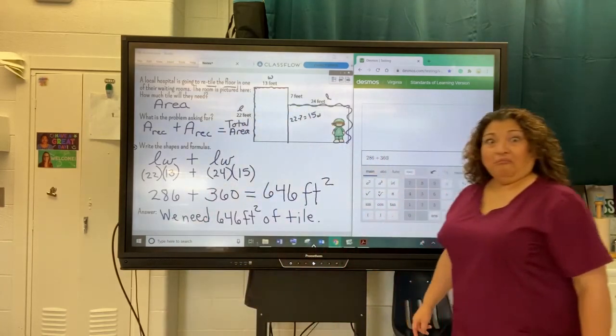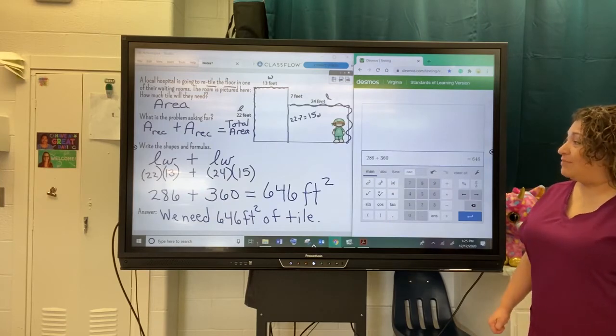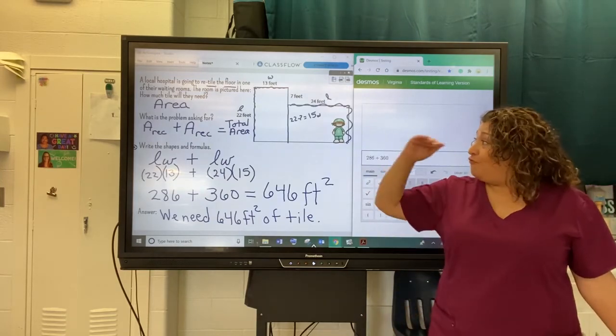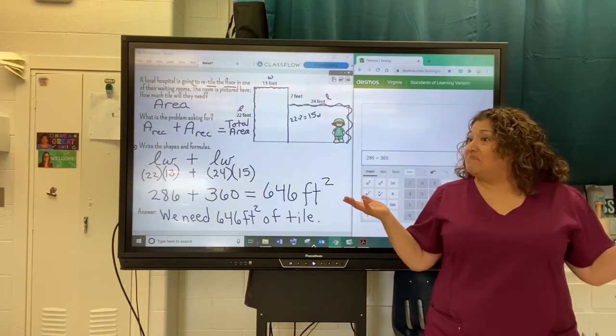Okay, so when I add those two things together, 286 plus 360, I get a grand total of 646 feet squared. Pretty neat, huh? That's kind of awesome. Yeah, it is pretty awesome. It looks like a lot, but really if you follow those steps that we showed you on that very first page, you're going to be set.